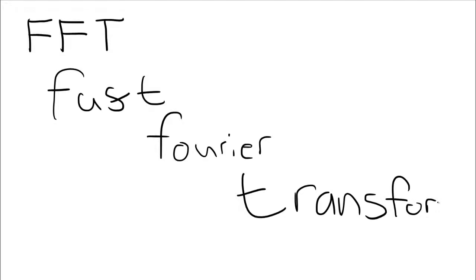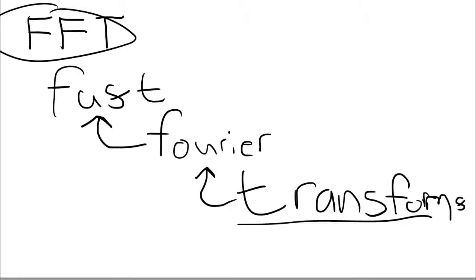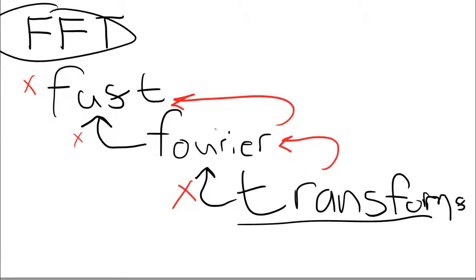Before we can get to the meat of this I need to back up a little bit and explain how we get there. To really understand the FFT you need to know where these terms come from first: we need the concept of transforms, then we look at what a Fourier transform is, and then we look at what it means to be fast. Unfortunately people start at the fast part and don't really get the Fourier part and the whole idea of a transform.